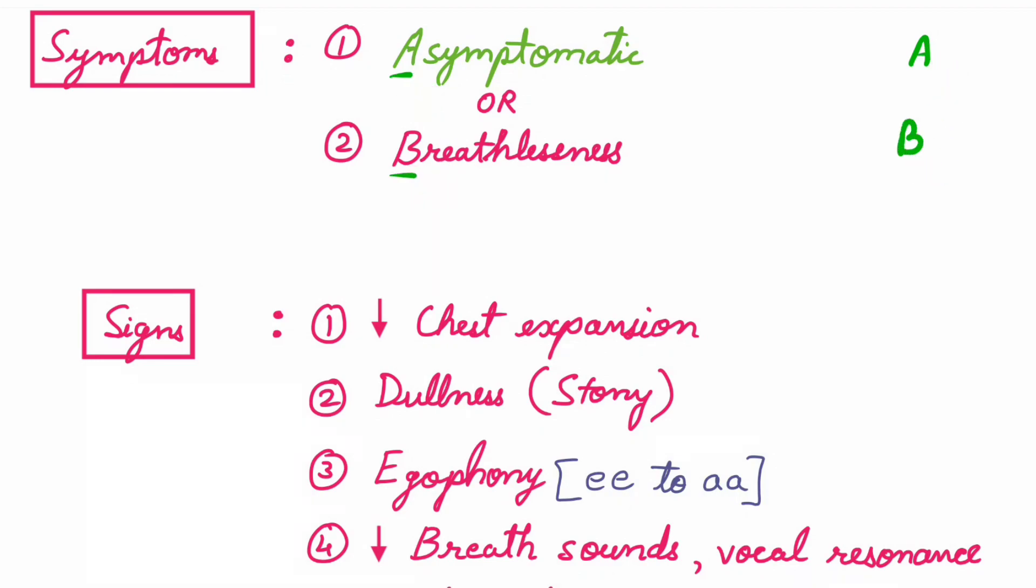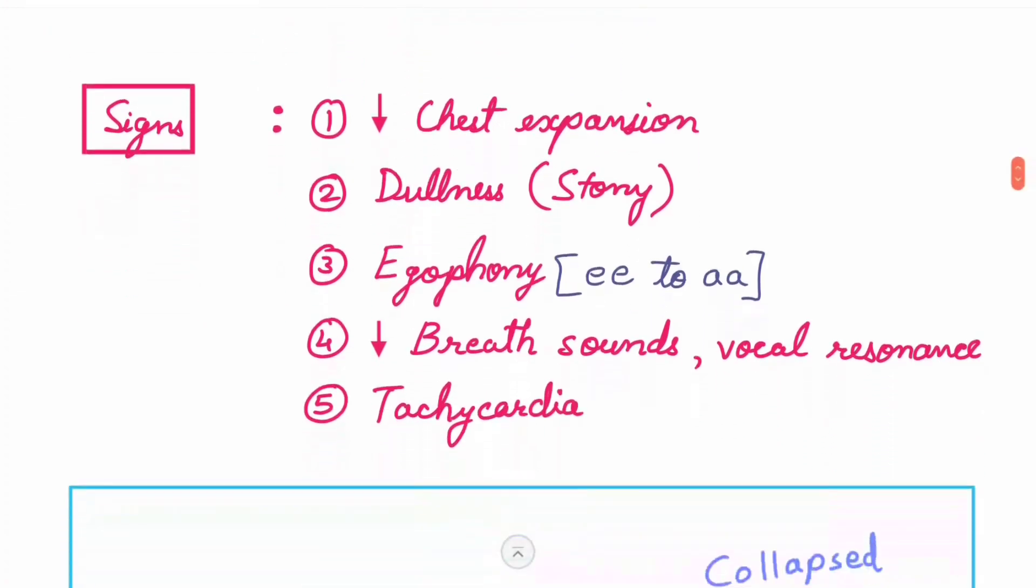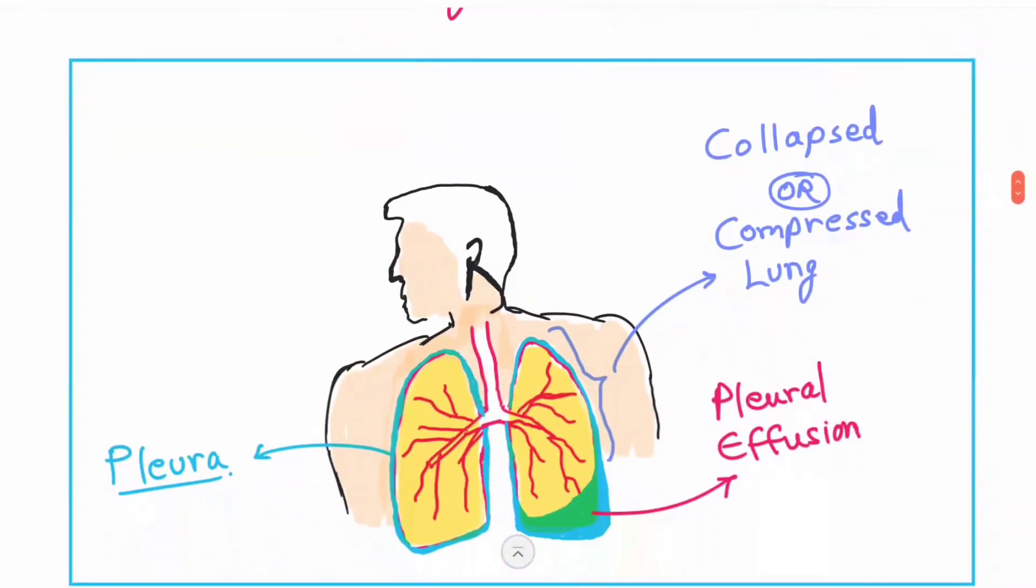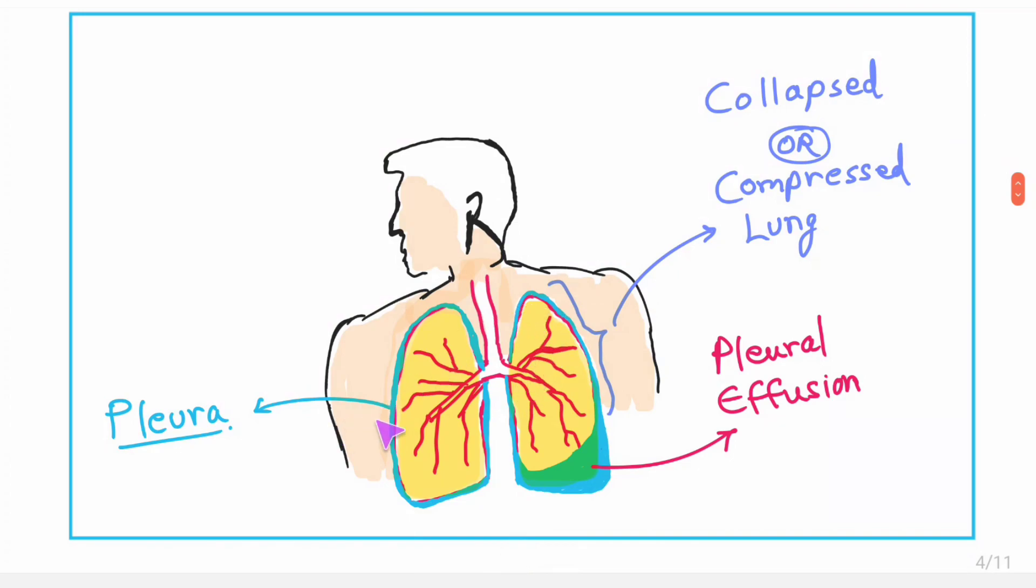You can remember these signs and symptoms using ABCDDE. You can see a beautiful diagram here: this is the pleura, this is the fluid accumulated in your lungs - that is pleural effusion. This fluid compresses part of the lung, so the lung becomes collapsed or compressed.